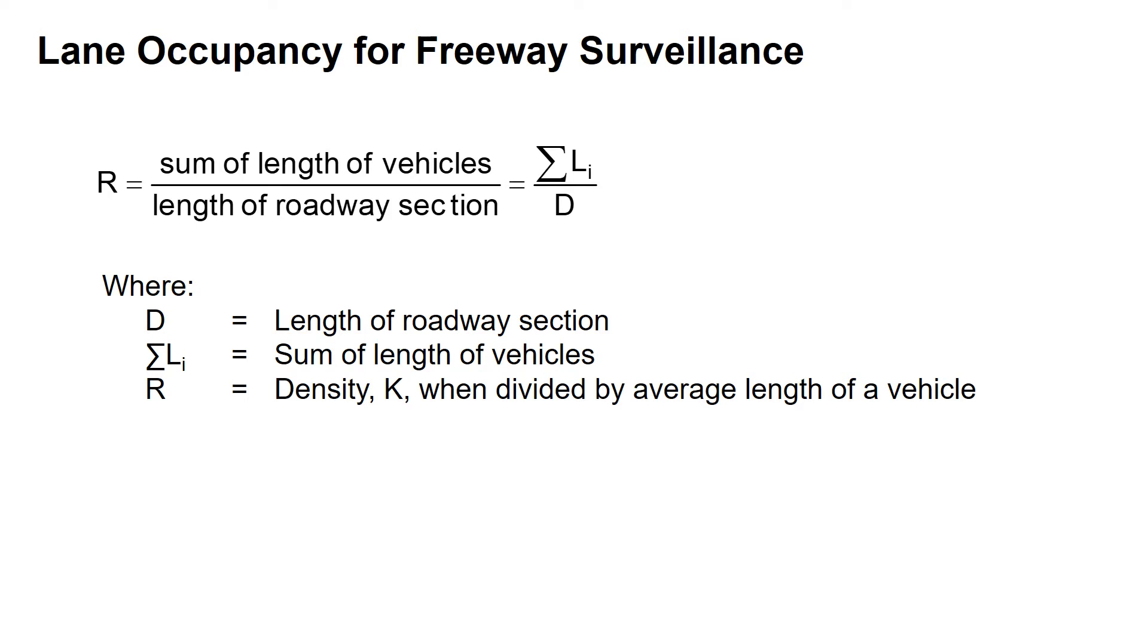We're looking at how much of the lane is occupied and dividing by the length of the roadway segment. In terms of the equation itself, that's the sum of the individual lengths of the vehicles divided by the overall length of the segment D.